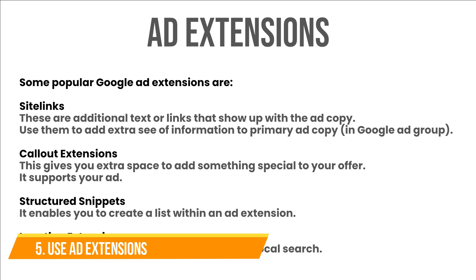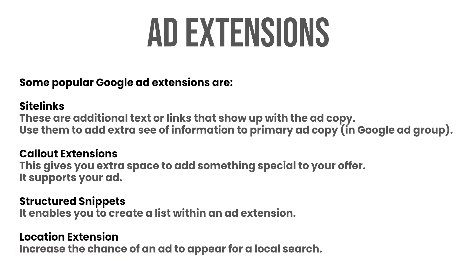5. Use ad extensions. Ad extensions may cost you a little extra time and effort, but are premium suggestions of leading brands in the advertising industry. Some popular Google ad extensions are additional text or links that show up with the ad copy. Use them to add an extra layer of information to your primary ad copy. Call-out extensions give you extra space to add something special to your offer. Structured snippets enable you to create a list within an ad extension. Location extensions increase the chance of an ad appearing for a local search. Call and location extensions are best suited for audiences on mobile, enabling instant purchase or resolving queries by contacting the seller.